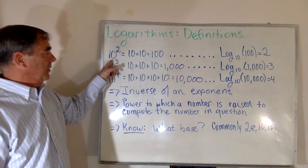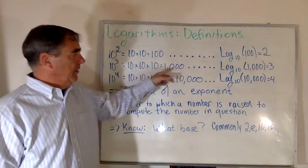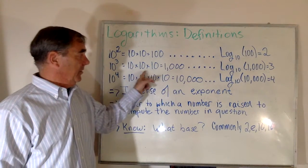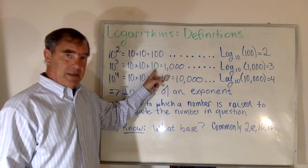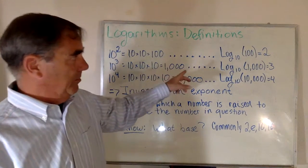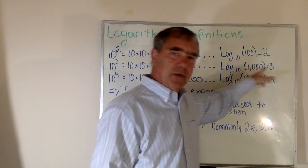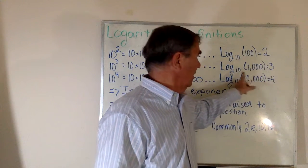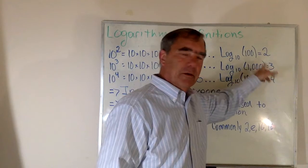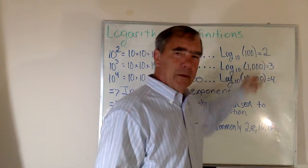10 raised to the third power is 1,000 which is 10 times itself three times. And what this means is that the base 10 logarithm of 1,000 is 3 because 10 raised to the third power is 1,000.